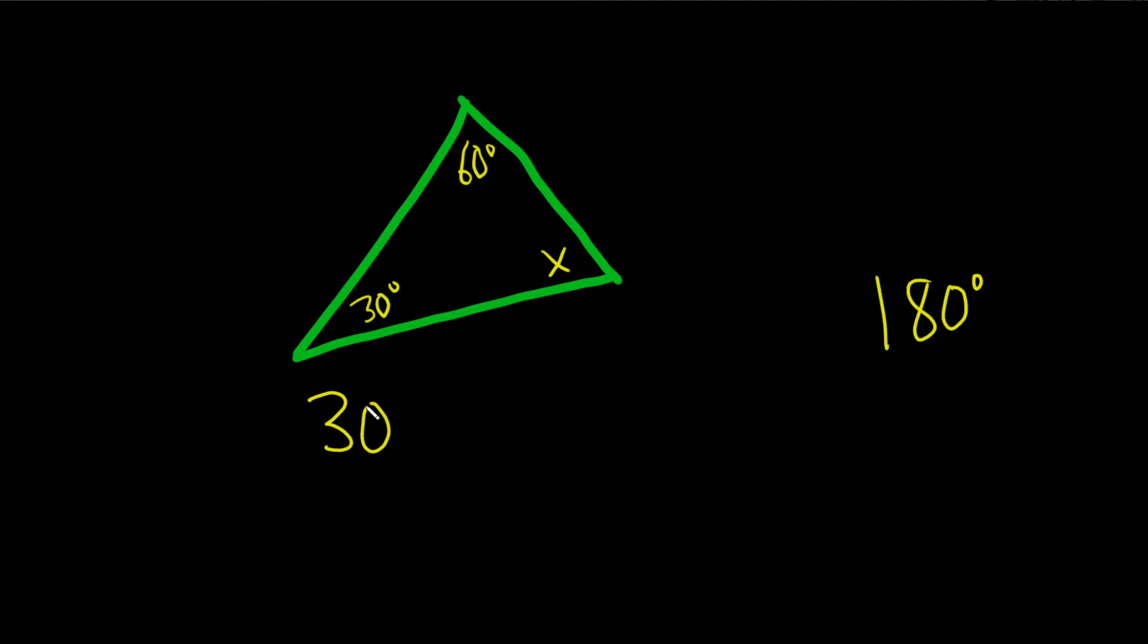So if you do 30 plus 60 plus the angle we're missing, which is called X, if you add up all of these angles, you're always going to get 180 degrees.